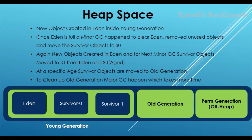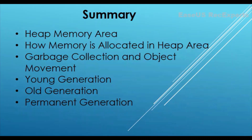The contents of permanent generation are loaded when the JVM is loaded and will only be cleared once the JVM is killed or shut down. To summarize: we have seen the heap memory area, how memory is allocated and deallocated, garbage collections, and what kind of data is stored in young generation and old generation. Inside young generation, we discussed sub-components like Eden space and survivor spaces, and finally permanent generation, with a live demonstration using Java Visual VM.